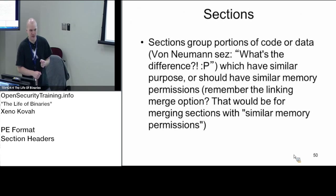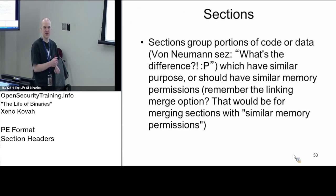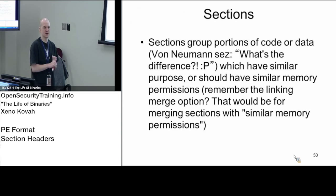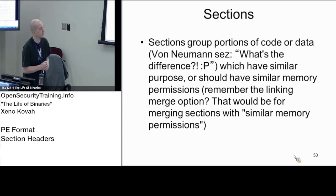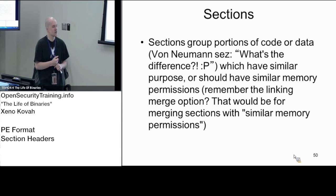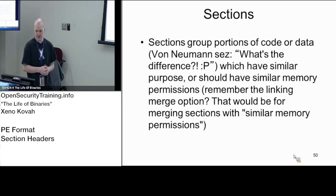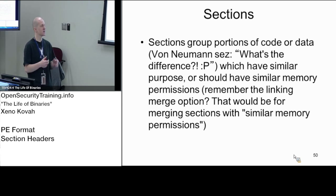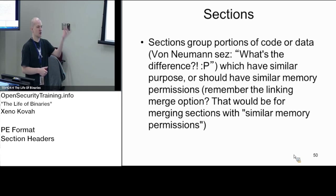Section headers. We already alluded to these a couple of times. Which data structure told us the number of section headers? The file header. The point of sections is basically to group similar code or data — things that should have the same permissions in memory, things that should be contiguous — group them into chunks, and let the OS loader load them up and give them the same permissions once they're mapped in memory.